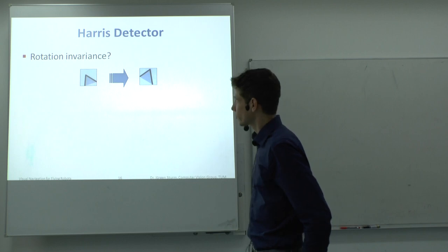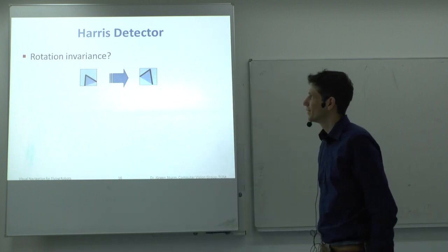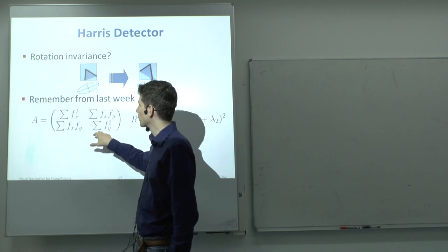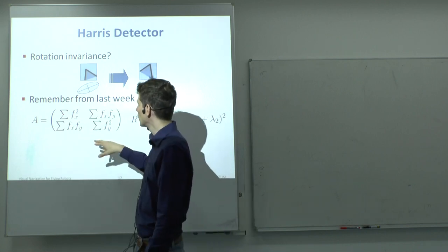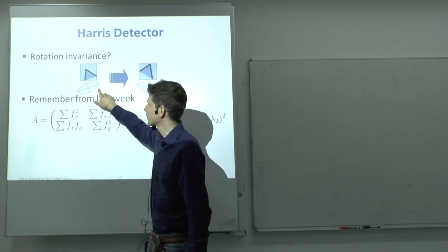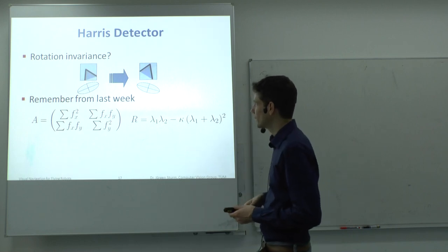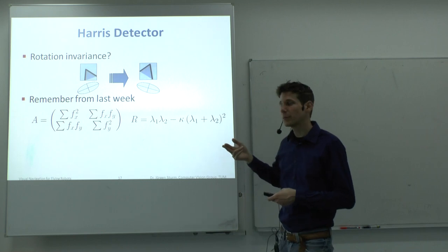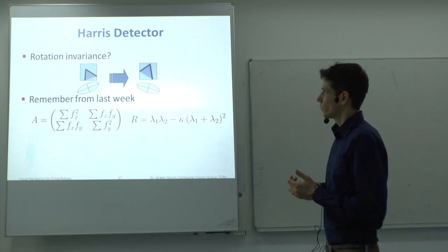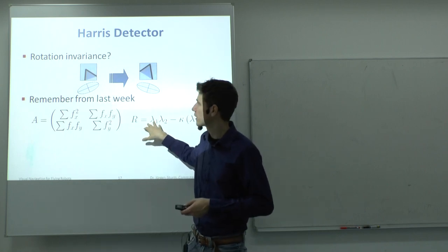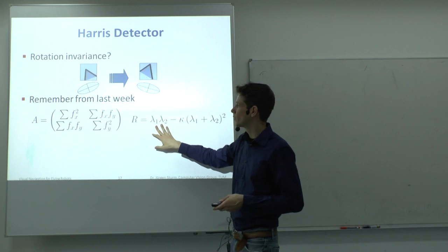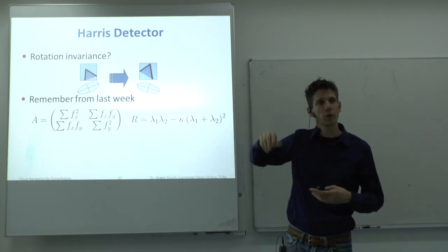From last week, is the Harris detector rotationally invariant? Yes — because it only looks at the eigenvalues of the matrix formed from image derivatives in x and y direction, and the eigenvalues do not change with rotation. So the corner response R of the Harris detector is invariant: even if you rotate the camera, it will still give you the same corners.